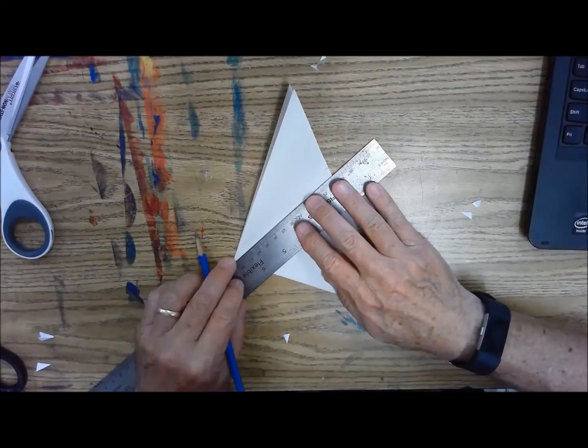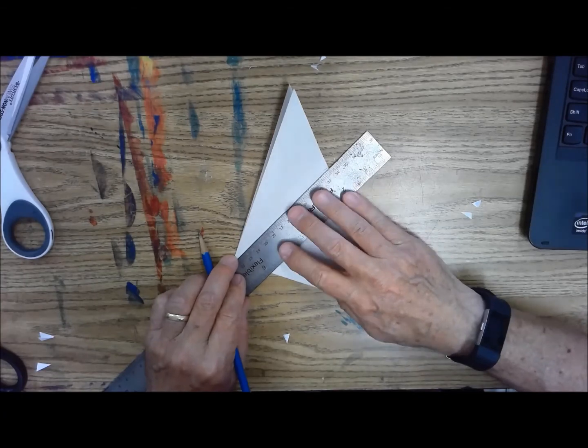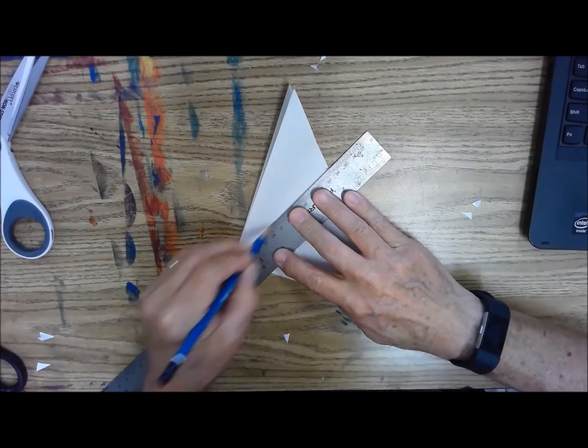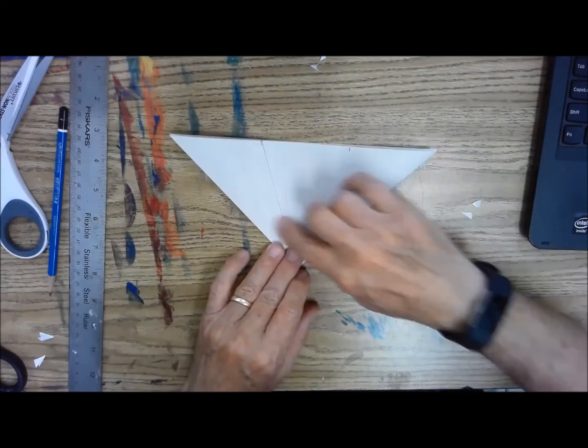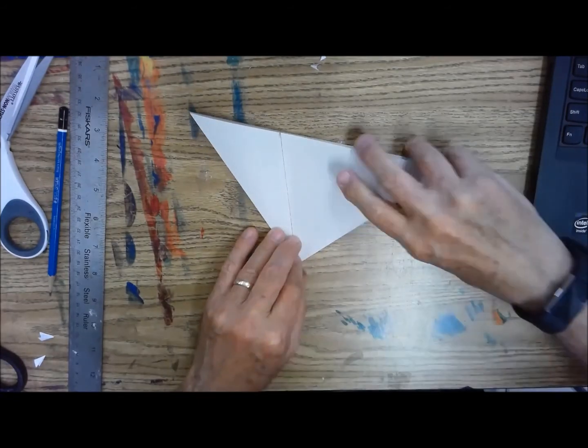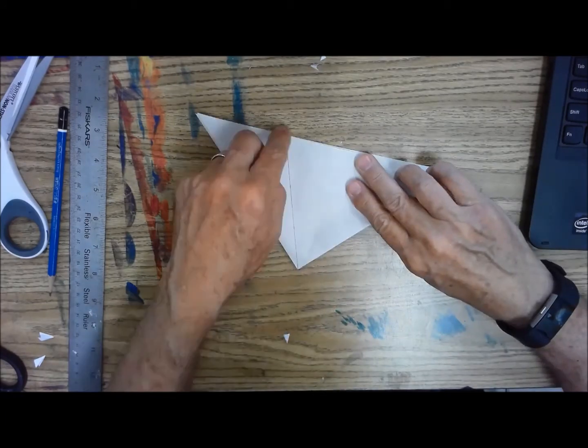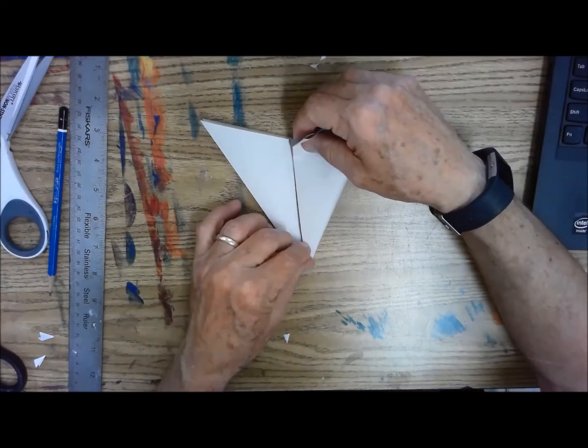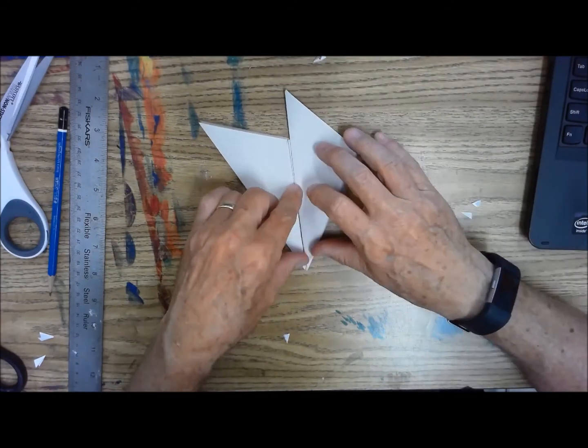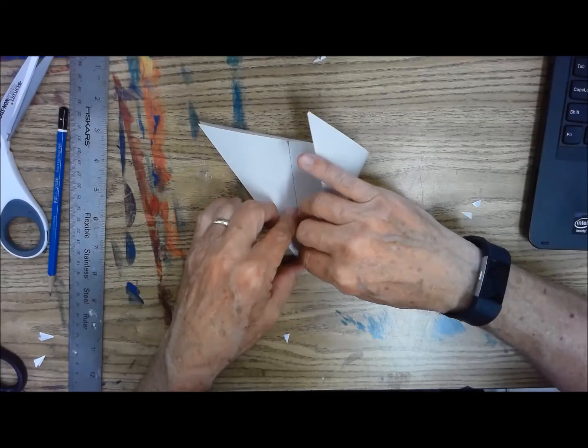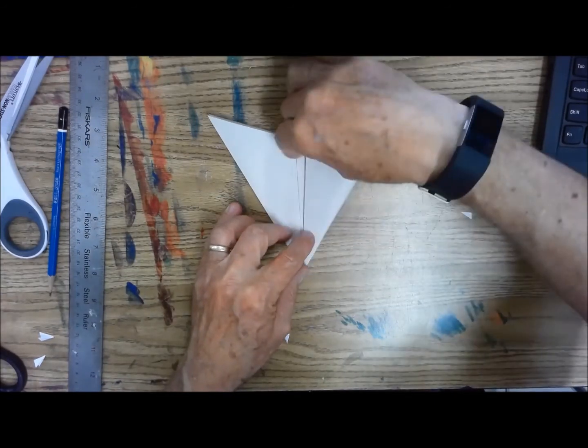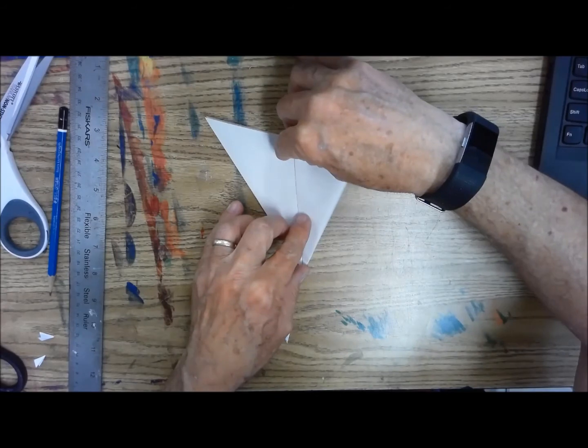And I know on the template it had two lines drawn. I'm just going to draw the one because that's really all we need. And we're going to take this edge of the triangle and fold it over so that it lines up with that line there. And you want it to come to as close to a point down here on the bottom as possible. That's just going to make it more precise.